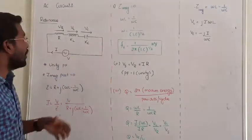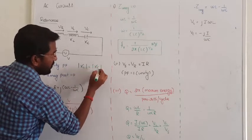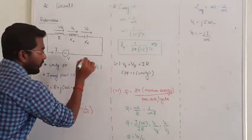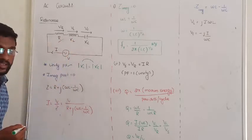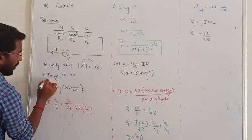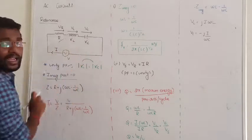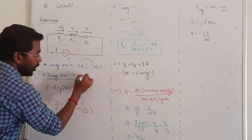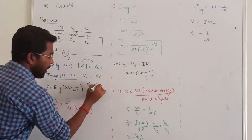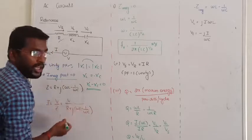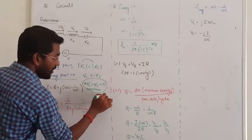The imaginary part will be zero, so we have magnitude only. The magnitude of XL must be equal to the magnitude of XC — that is the point where we are facing resonance. The imaginary part is going to be zero because XL is positive and XC is negative; when we add these two terms, that is going to be zero.